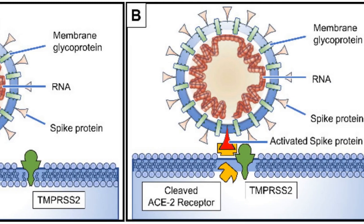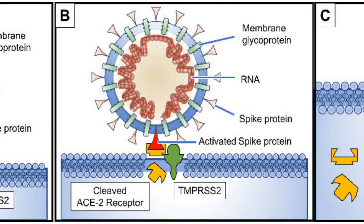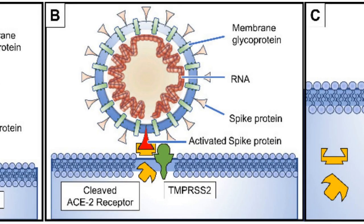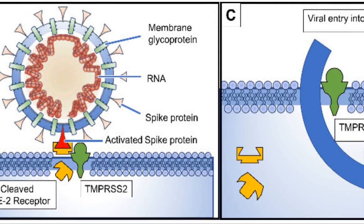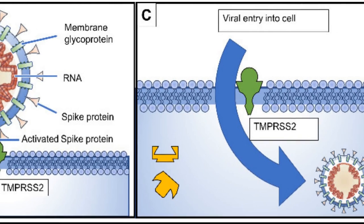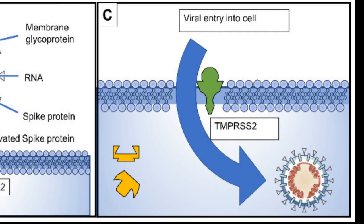TMPRSS2 is an enzyme that breaks down spike proteins and binds to and cleaves the ACE2 receptor. Through this process, the spike protein on the coronavirus gets activated. Then, the cleaved ACE2 and activated spike protein allow the virus to enter the cell through what is known as endocytosis. Once in the cell, the RNA enters the host cell to be copied, producing millions of viruses that are then carried to the outside of the cell to infect nearby cells or escape the lungs through coughing or sneezing.